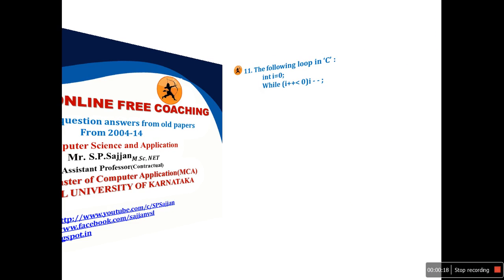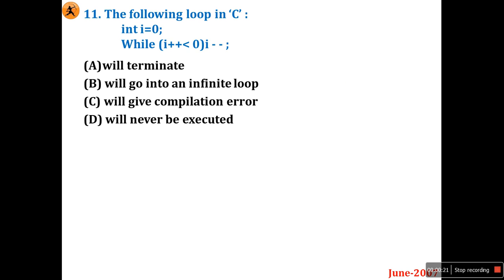Look at question number 11 in June 2007. The following loop in C: int i = 0; while (i++ < 0) { i--; }. Options are: it will execute and terminate, it will go into an infinite loop, it will give a compilation error, or it will never be executed.